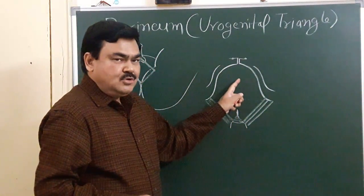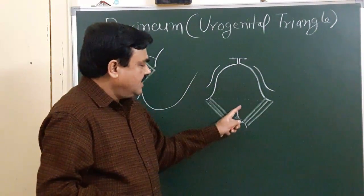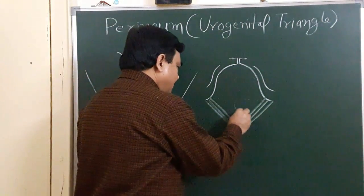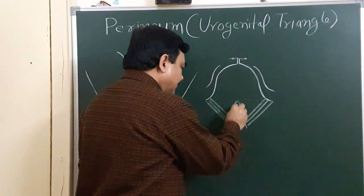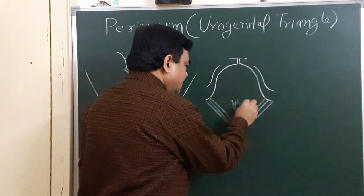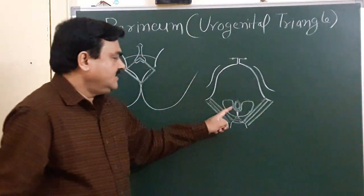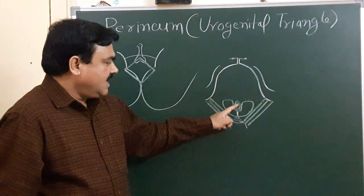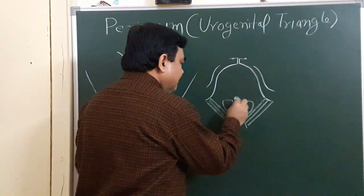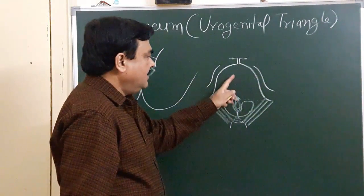This horizontal line divides the perineum into two triangles: the anterior triangle is the urogenital triangle, and the posterior triangle is the anal triangle. In the anal triangle you have already seen the anal canal and the ischioanal fossa. Here is the perineal body.